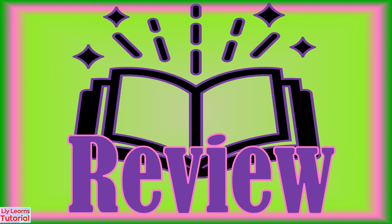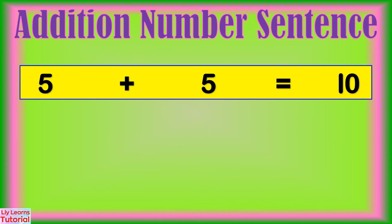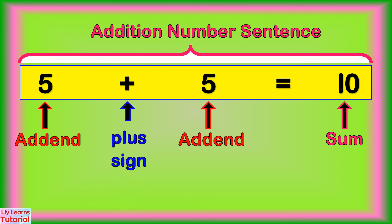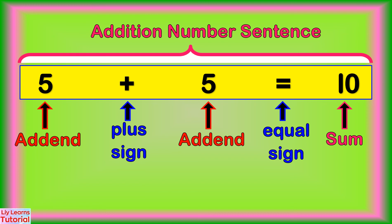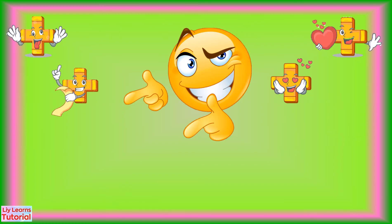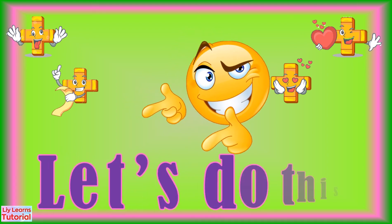Let's review! This is an addition number sentence. 5 and 5 are the add-ins. 10 is the sum. This is the plus sign, and this is an equal sign. We can read this as 5 plus 5 equals 10. Now you know the basic concepts of addition. It's your turn to show what you've learned. Let's do this!